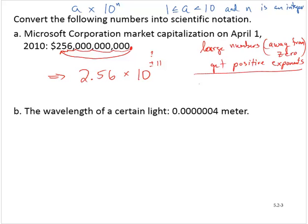Whereas small numbers, what are small numbers? Small numbers are close to 0. Small numbers get negative exponents.